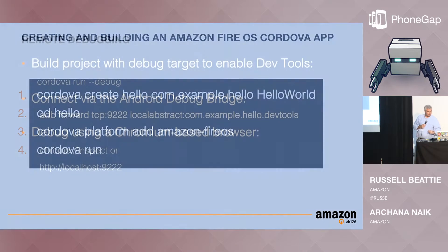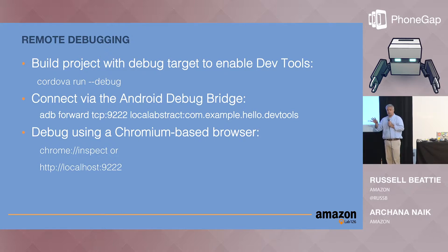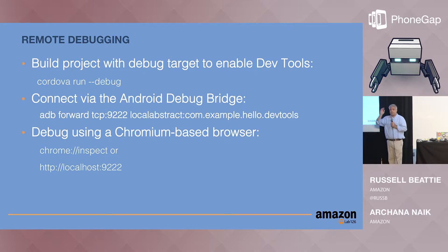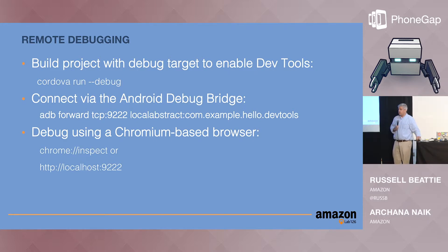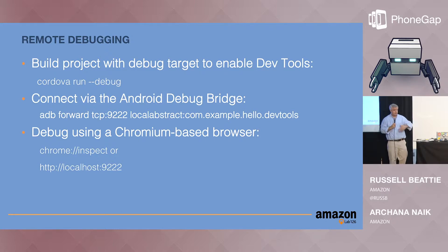Because we're basing it on Amazon WebView, if you run Cordova with the --debug flag, you can use remote debugging and actually debug the application right on the hardware using Chromium DevTools on your desktop. On older Fire OS 3 devices, you connect using the Android Debug Bridge and then go to localhost. On newer devices that run Fire OS 4, you can just go to Chrome Inspect and the device will show up there.